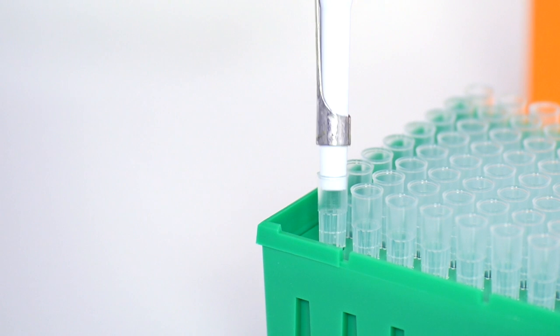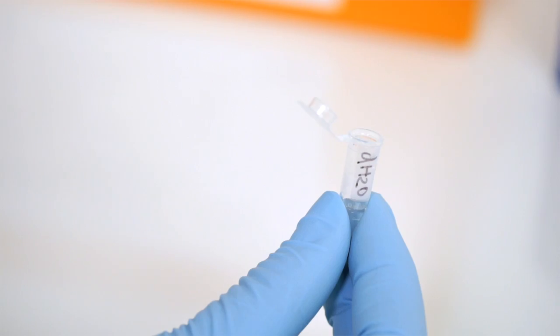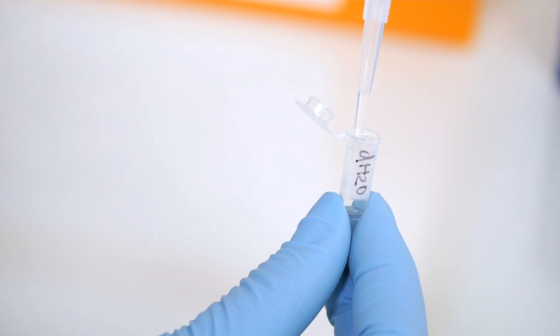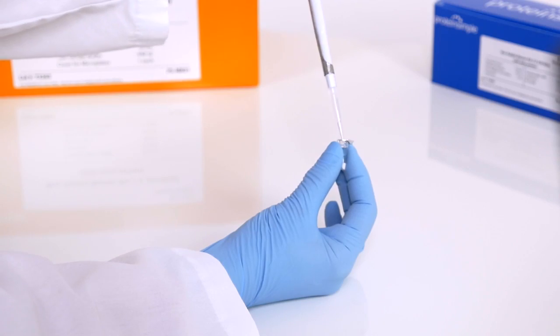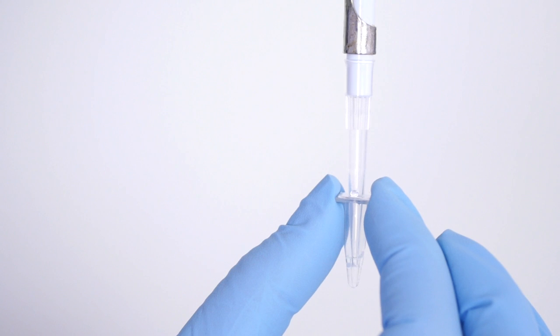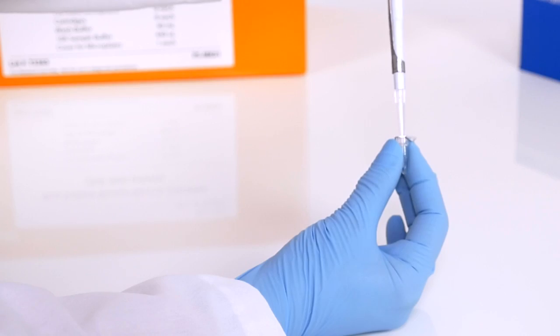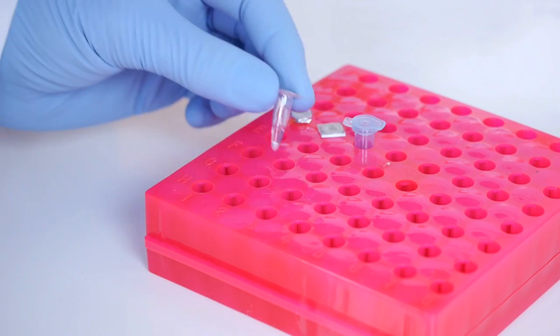We'll start with preparing the DTT. Pipette 40 microliters of water into the clear DTT tube. Gently mix by pipetting up and down a few times. This will give you 400 millimolar concentration of DTT solution.